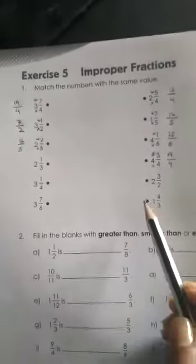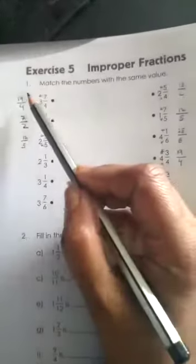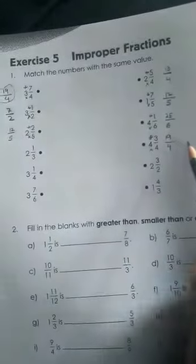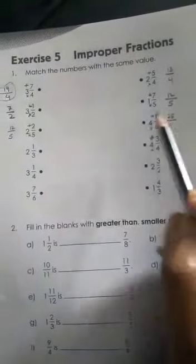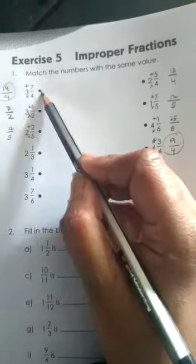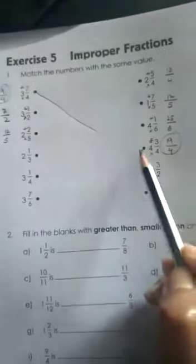It's easy and you can easily match it. See, I can see here 19 by 4 and I can see here 19 by 4, so we'll match this mixed number with this one. Got it? So this way you'll complete question number one of your practice book.